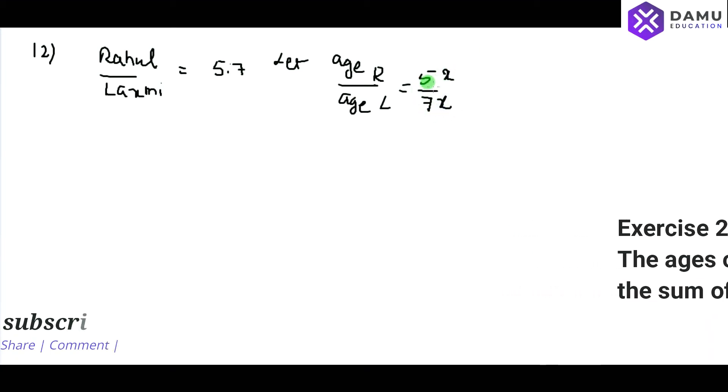If you cancel both x's, then we will get 5 is to 7. After 4 years, so what they have asked? After 4 years, sum of their ages will be 56 years.